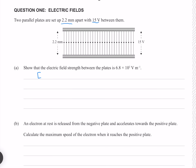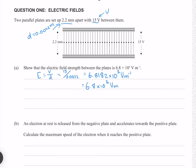From the formula sheet, electric field strength is voltage over distance, where our voltage is 15 and our distance is 2.2mm, which converted into meters is 0.0022 meters. Putting those numbers in gives 6.8182 × 10³ volts per meter, or 6.8 to 2 significant figures, which is what we're trying to find.